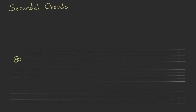Traditionally we've seen tertian triads that are stacked in thirds: one, two, three from the first note to the second note, and one, two, three from the middle note to the top note. But in this video we're talking about secundal chords, built in seconds: one, two from the first note to the second, and one, two from the second note to the third.